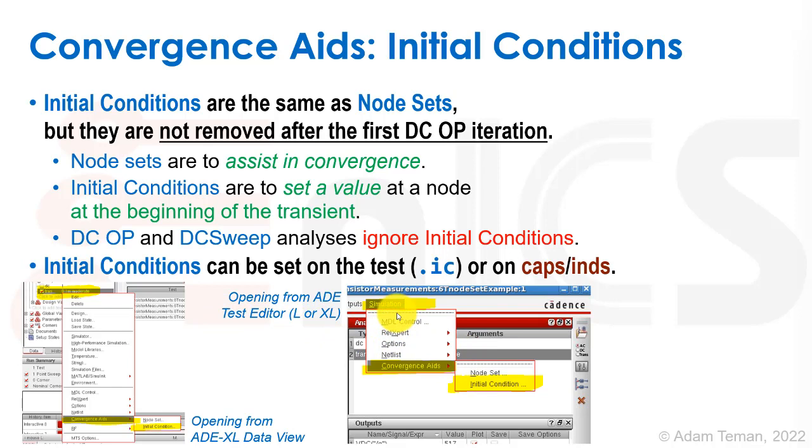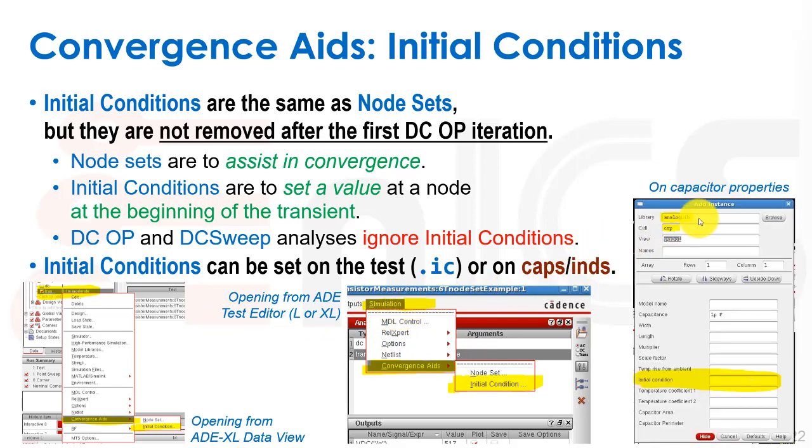You can also open the properties of a capacitor or an inductor. Since we're usually talking about capacitors in the digital circuit world, I'm showing you on capacitors. We have initial condition, which will put an initial voltage across the capacitor. So that's like a VC at zero. Those are the two ways of doing it. You can use parameters for this type of thing and run parametric sweeps, similar to the node sets as well.